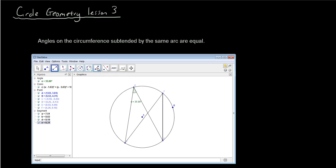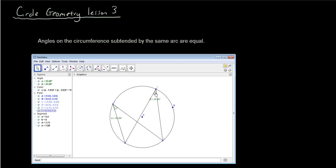I'll see how big this angle is. You can see it's also 35.99. It doesn't matter where you relocate these points, it's always going to be 35.99 because both angles are subtended by this arc C to D.